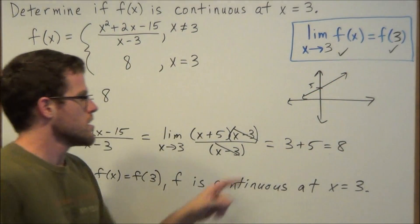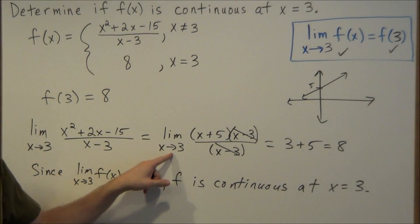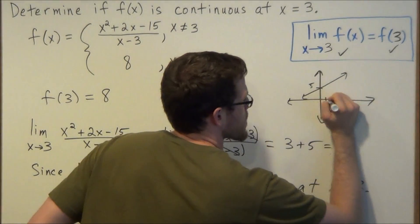Which if I do a rough sketch, is a linear equation, but there's a hole in the graph when x is equal to 3.